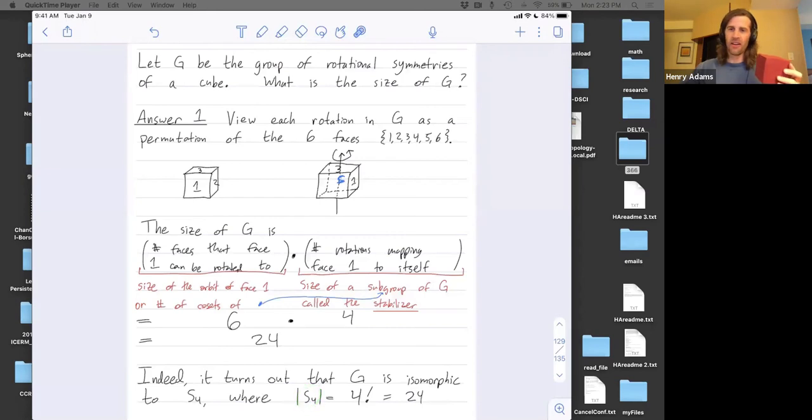Why does S4 come up? There's actually four diagonals going through this cube. So you could connect these two vertices with a diagonal, or these two vertices with a diagonal, or these two vertices with a diagonal, or these two vertices with a diagonal. There's a diagonal edge going through every one of the four top vertices down to one of the bottom vertices. And any rotation can be viewed as permuting those four diagonals. And any way you want to permute those four diagonals can be realized as a rotation, it turns out.